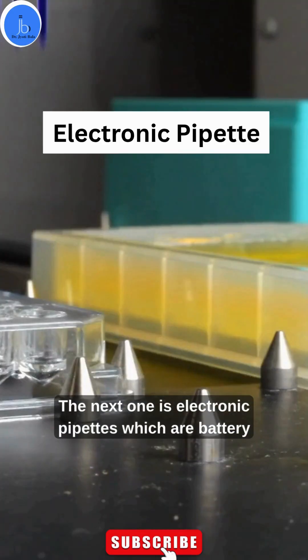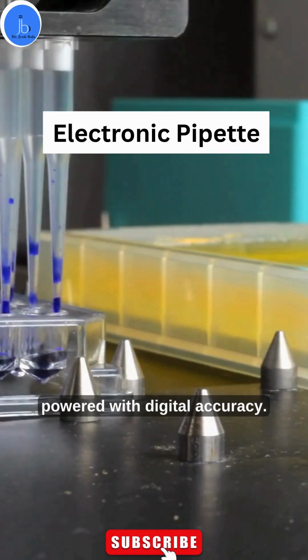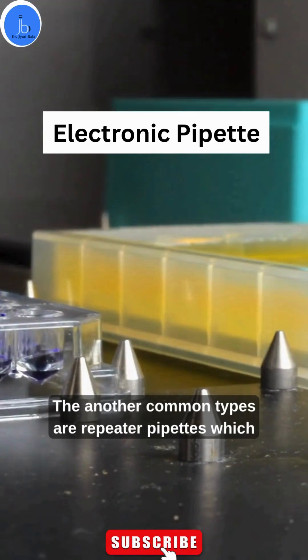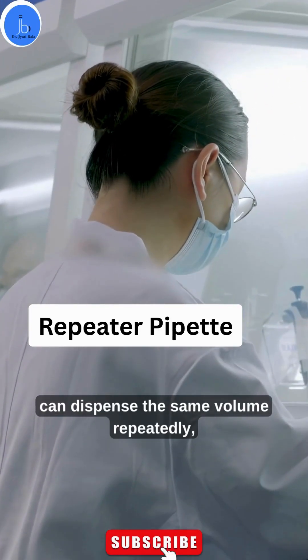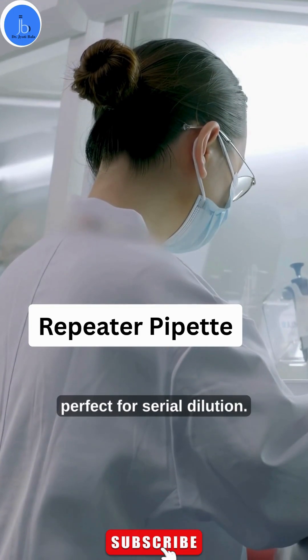Next is electronic pipettes, which are battery-powered with digital accuracy. Another common type is repeater pipettes, which dispense the same volume repeatedly, perfect for serial dilutions.